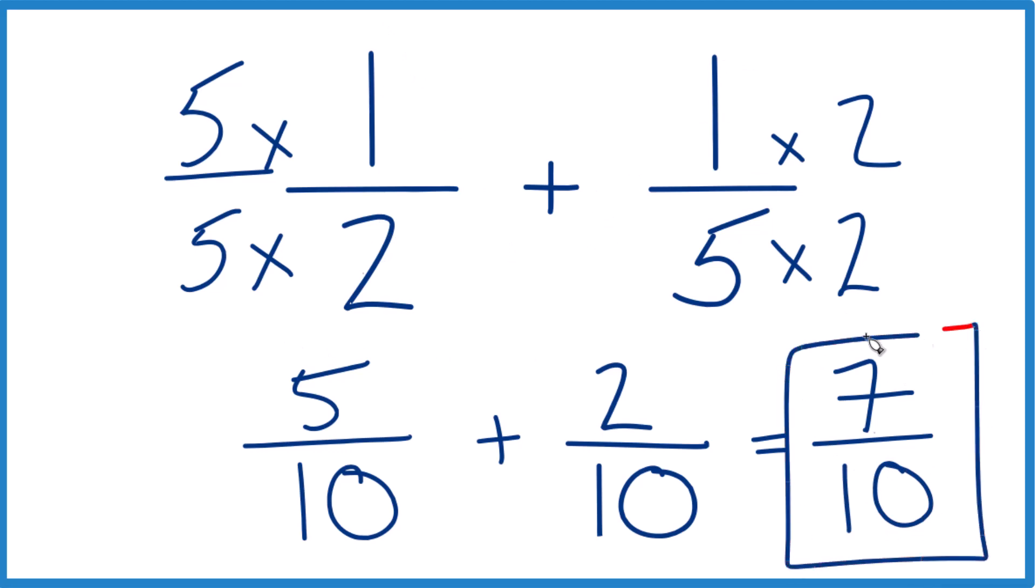So in answer to our question, 1 half plus 1 fifth that equals 7 tenths. That's it, that's it. This is Dr. B, thanks for watching.